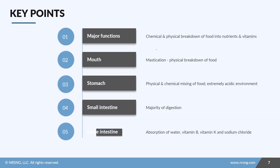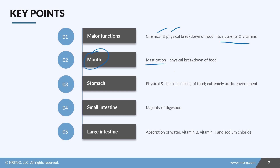To recap: the major functions of the GI tract are the chemical and physical breakdown of food into nutrients and vitamins. This starts in the mouth through mastication — physical breakdown. In the stomach, there is both chemical and physical mixing; it's extremely acidic at 1.5 to 2.5 pH. In the small intestine, the majority of digestion and absorption through lacteals occurs. In the large intestine, absorption of water, vitamin B, vitamin K, and sodium chloride occurs, and the body eliminates waste.